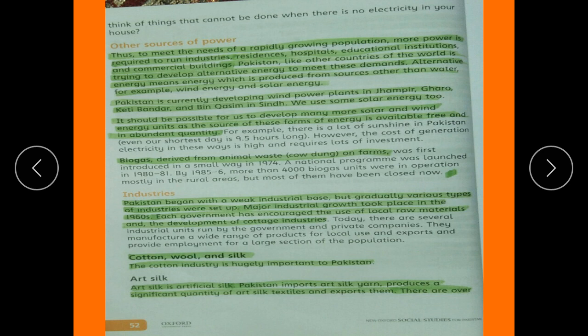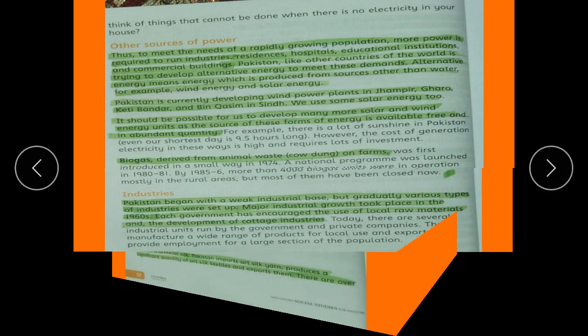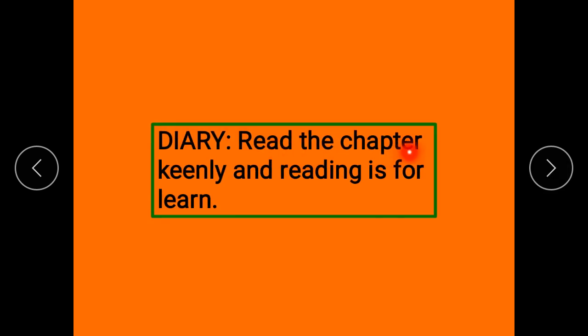Biogas, derived from animal waste such as cow dung on farms, is also a potential energy source available in large quantities. Biogas programs were initiated in 1974, 1980, and 1981, though these have since ended. Students, please read the chapter carefully for learning.